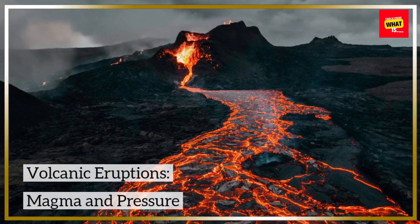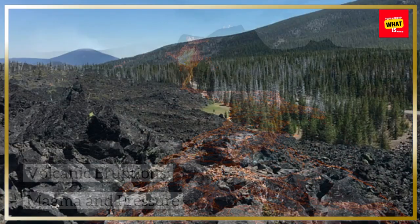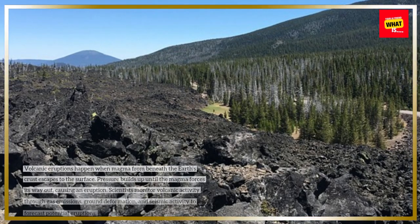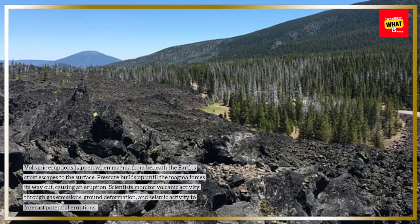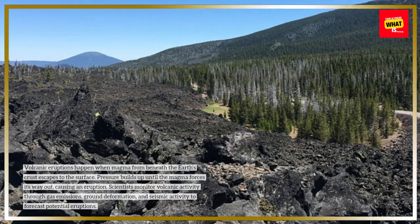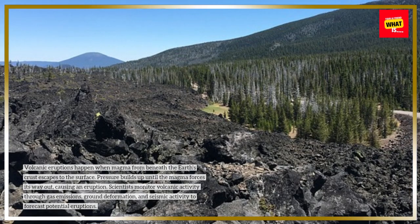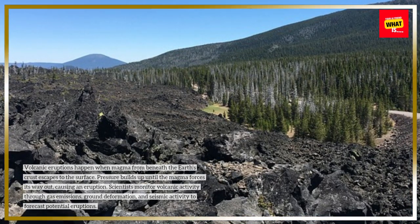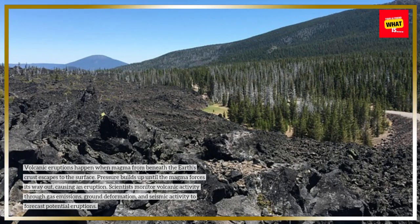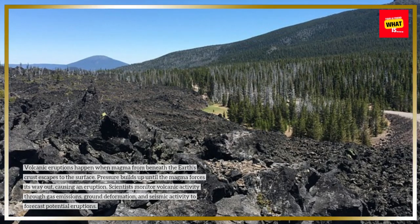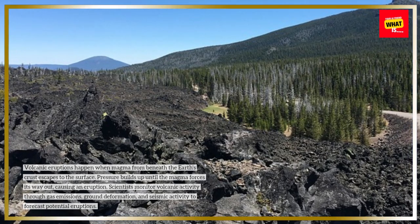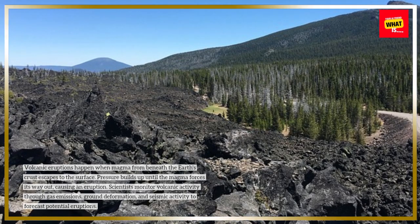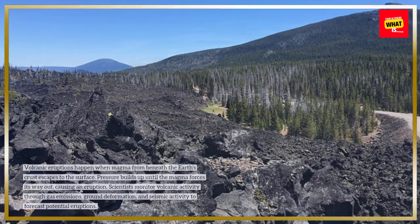Volcanic Eruptions: Magma and Pressure. Volcanic eruptions happen when magma from beneath the Earth's crust escapes to the surface. Pressure builds up until the magma forces its way out, causing an eruption. Scientists monitor volcanic activity through gas emissions, ground deformation, and seismic activity to forecast potential eruptions.